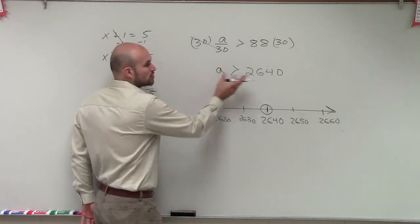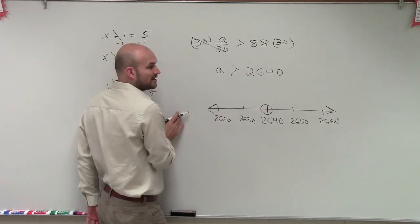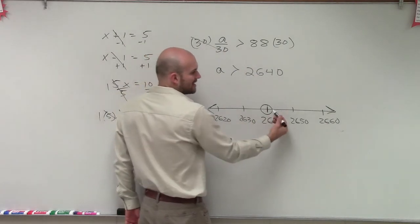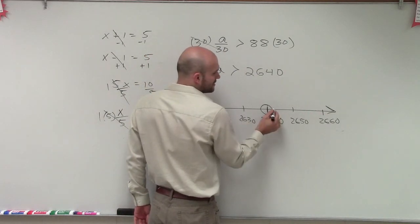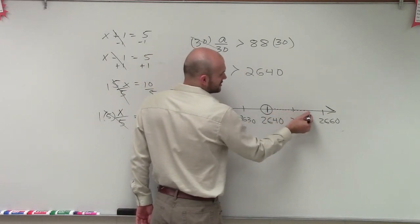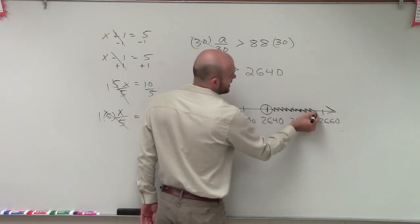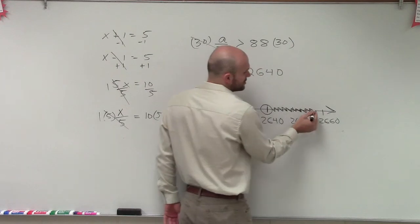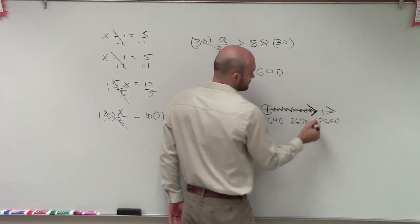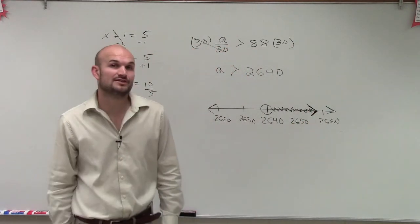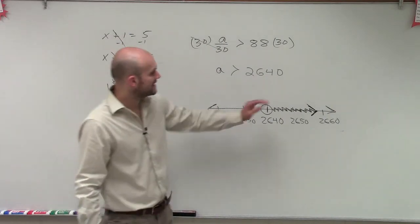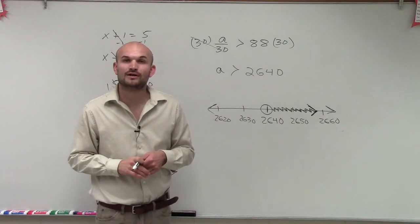However, all numbers that are greater than 2,640 are. So we look at, since our line graph, all these numbers are greater than. So rather than writing all these little infinite many dots, I'm just making a nice shaded line. And I know that as long as I keep on going to the right, those numbers are going to be greater than 2,640. So that is going to be my solution to my inequality. Thanks.